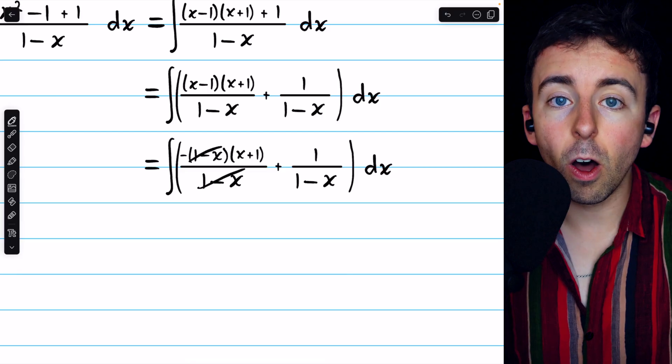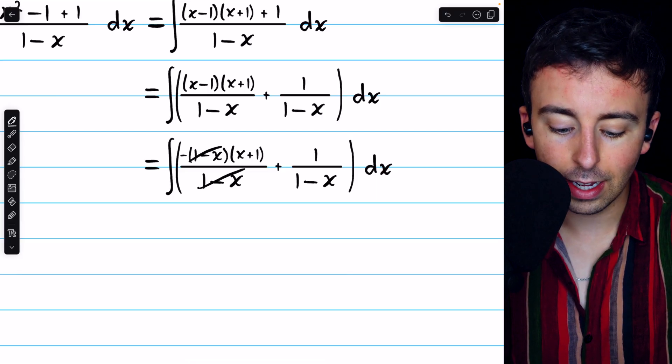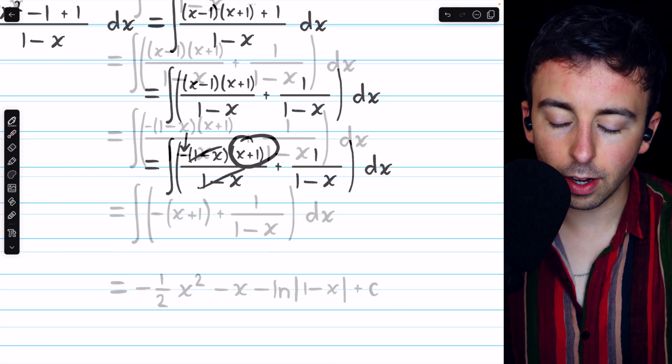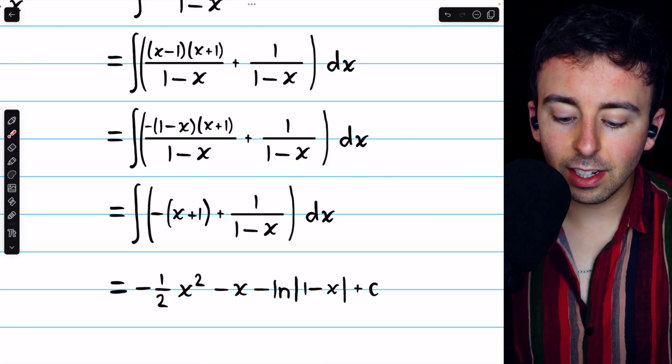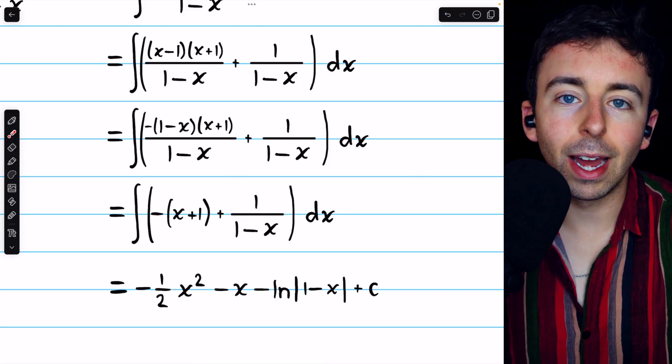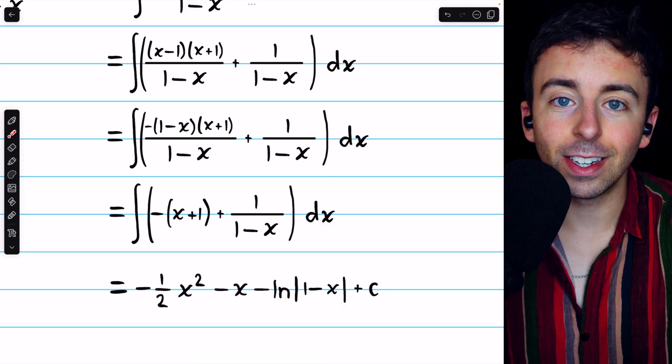All that will remain in this term, then, is negative x plus 1. So we have negative x plus 1, and still plus 1 over 1 minus x. And now we're prepared to integrate.